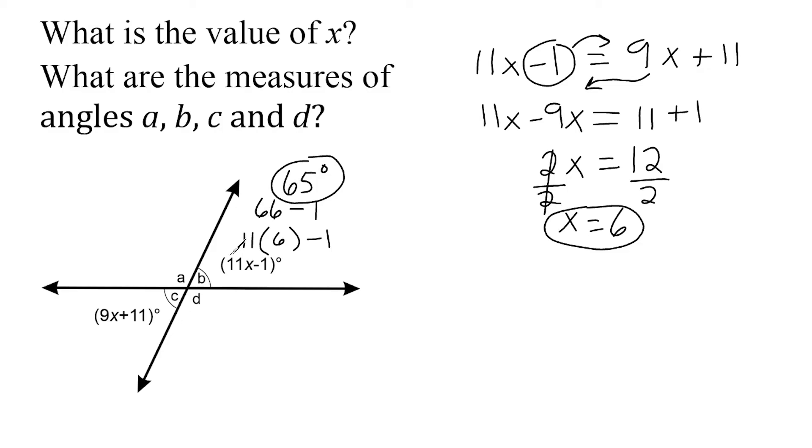Now if this angle is 65 degrees, then the one vertical to it, which is angle C, is also equal to 65 degrees.